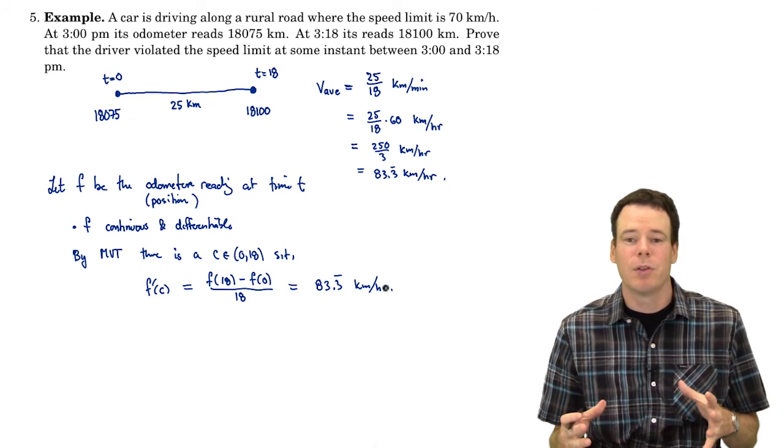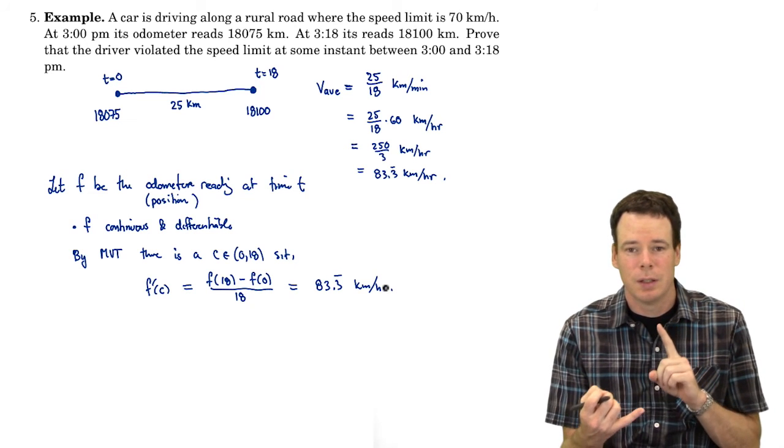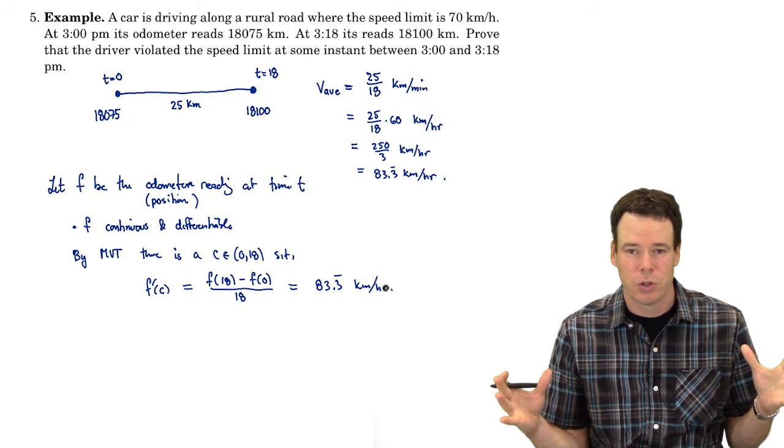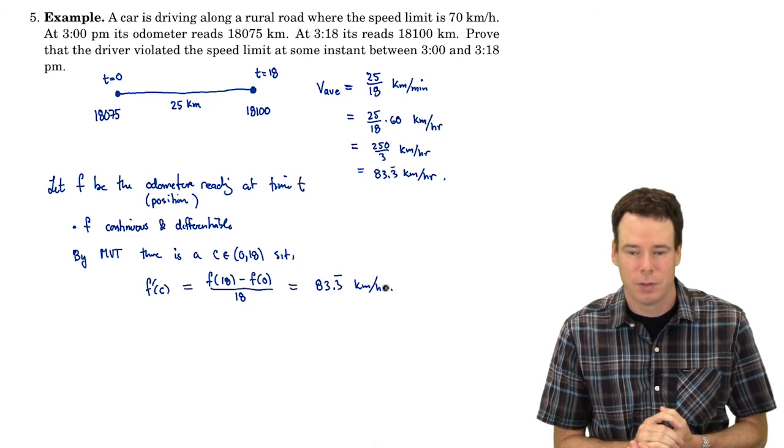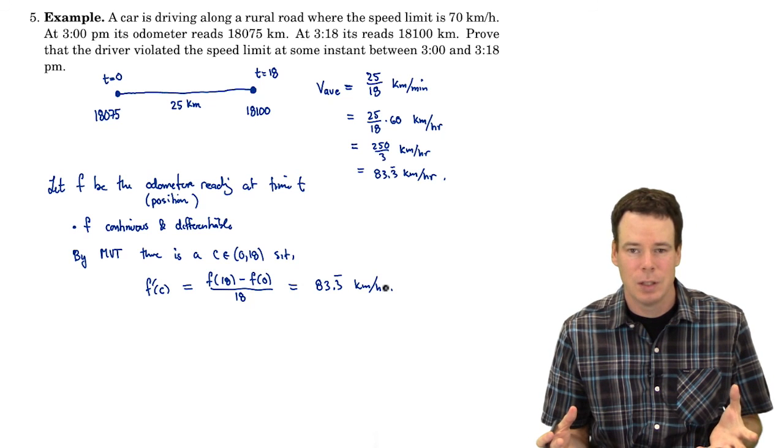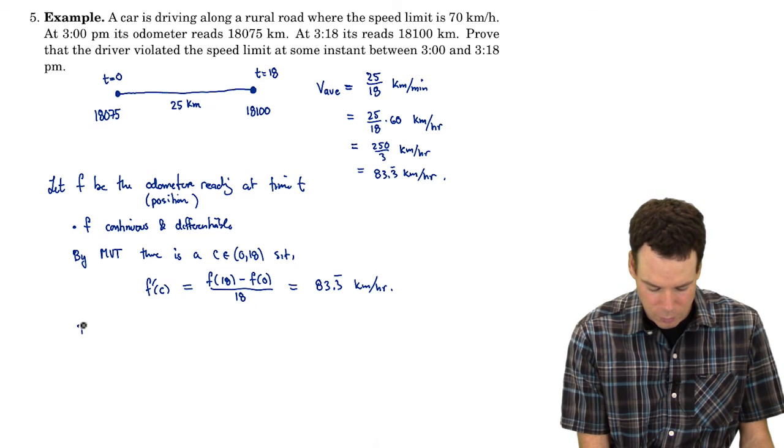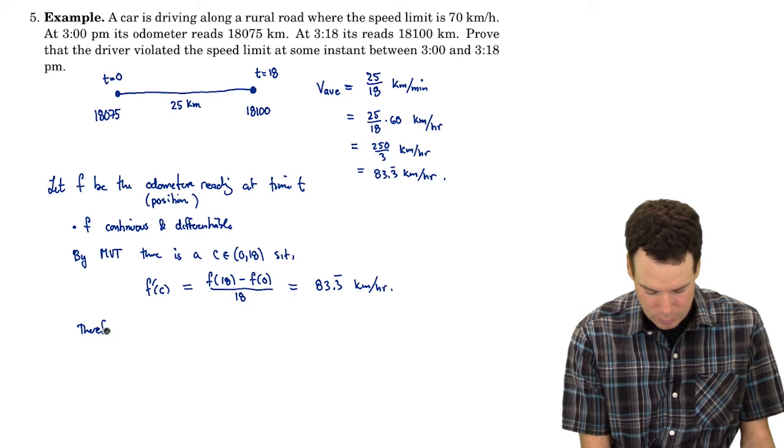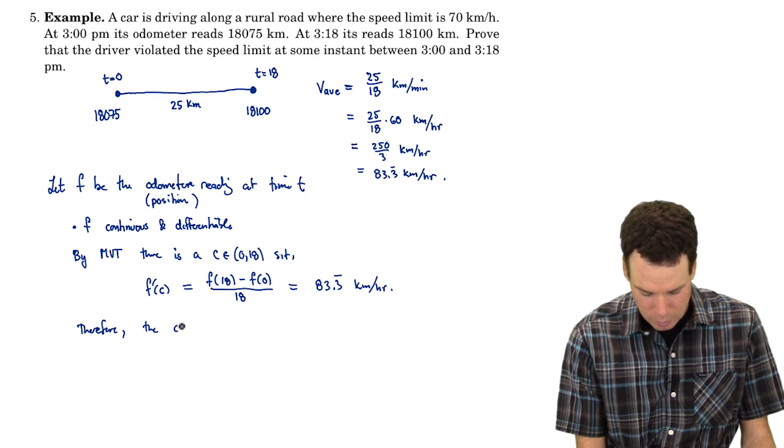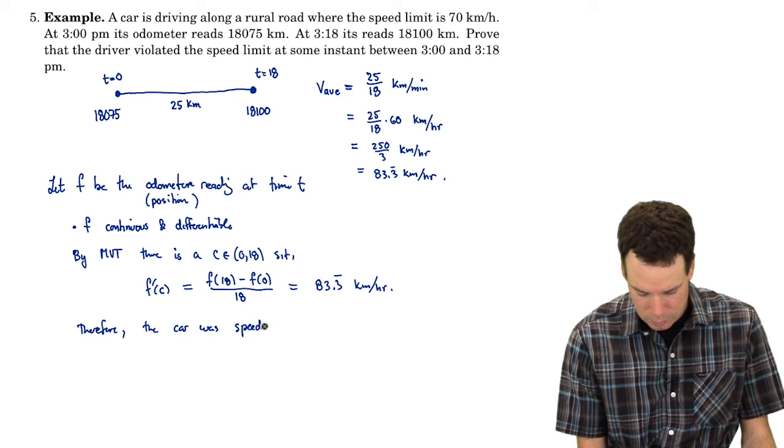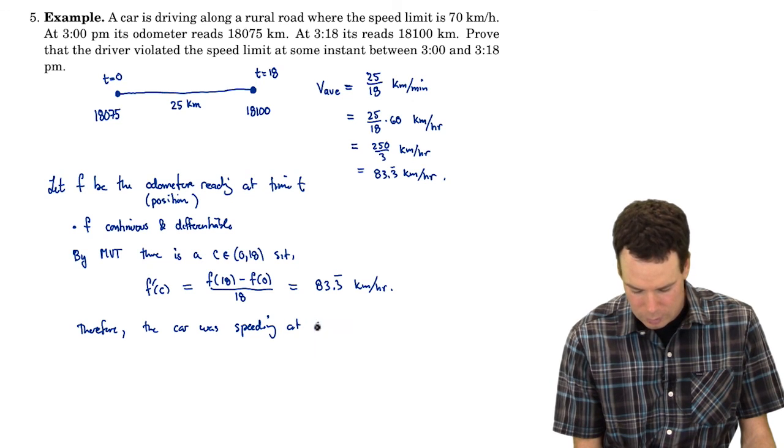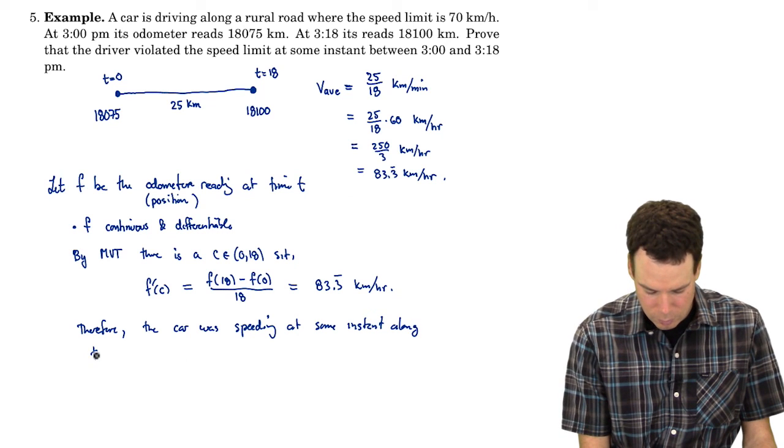So the mean value theorem is what allows us to conclude that the instantaneous velocity somewhere along your trip had to be equal to your average velocity. Our average velocity exceeded the speed limit, so at some point our instantaneous velocity had to as well. Therefore, the car was speeding at some instant along the road.